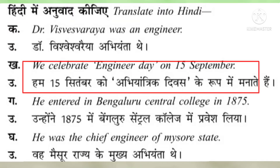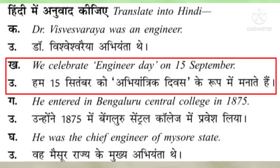Second sentence: We celebrate Engineer's Day on 15th September. 'We' means 'hum'. 15th September means 15th September. Hum 15th September ko Abhiyantha Diwas ke roop mein manate hain.